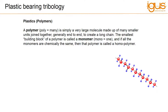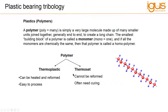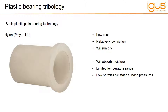Plastic, often referred to as polymer, is made up of many similar units joined together, generally end-to-end to create a long chain. There are two main types of polymers: thermoset, which often needs curing via heat or chemical process and cannot be reformed; and the more stable and easier to process thermoplastic. The latter is what we will be referring to in this webinar. Polyamide, PA for short, also traditionally known simply as nylon, is one of the most basic materials. Nylon bearings are plain bearings moulded from nylon.